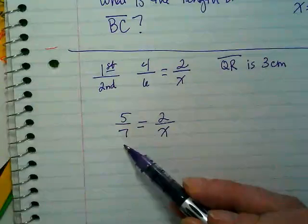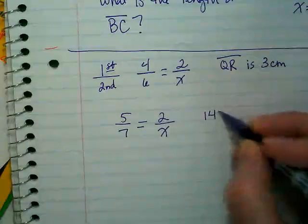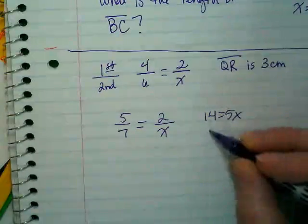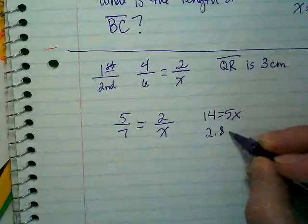Two times seven. So we have 14 is equal to 5X. You probably will want calculators for this because now we're dividing by five. And it's 2.8 inches.